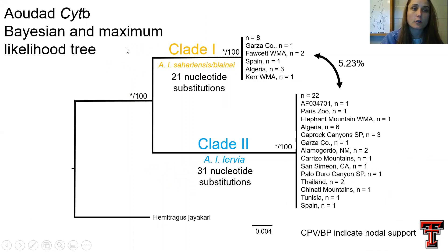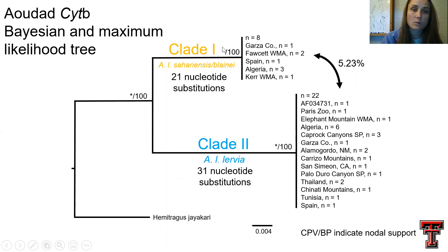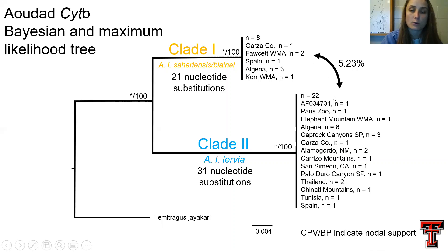This is a cytochrome B gene tree with identical sequences removed. Basically we see the same thing: we have clade one, potentially represented by the subspecies seriensis or blaini, as well as clade two, which may be represented by the subspecies lervia. Again, all nodes are supported with both methodologies, and there is a genetic divergence of 5.23%.